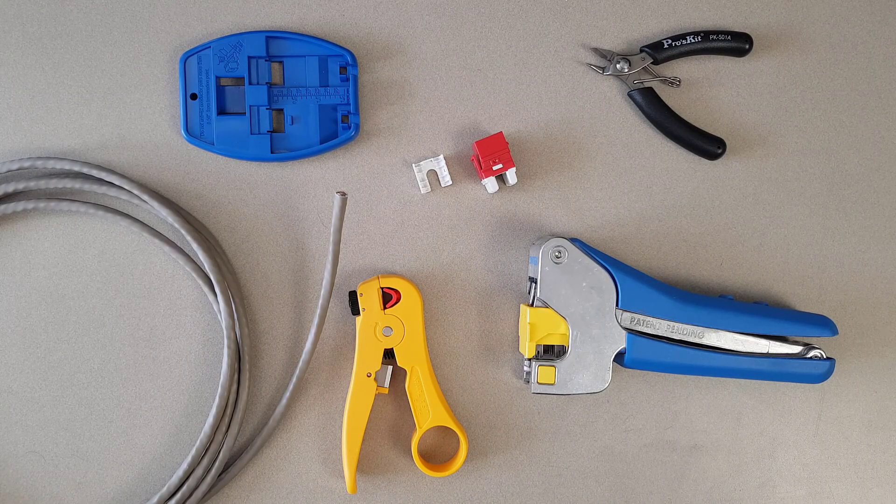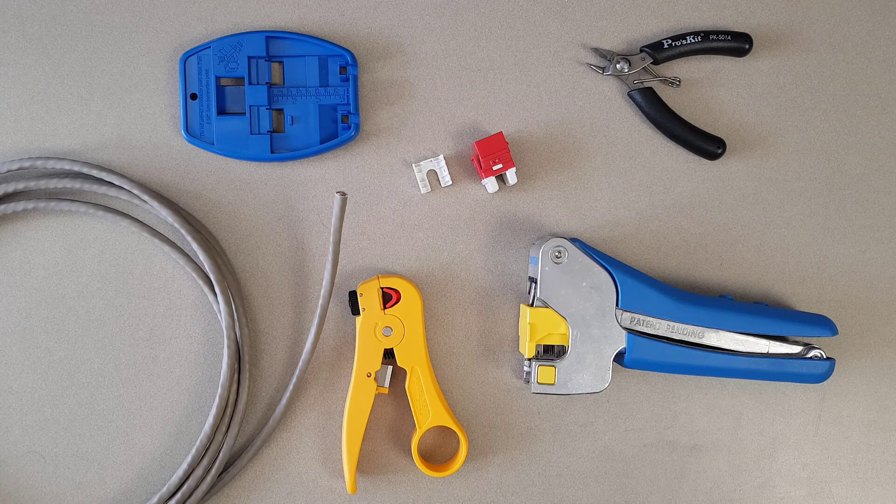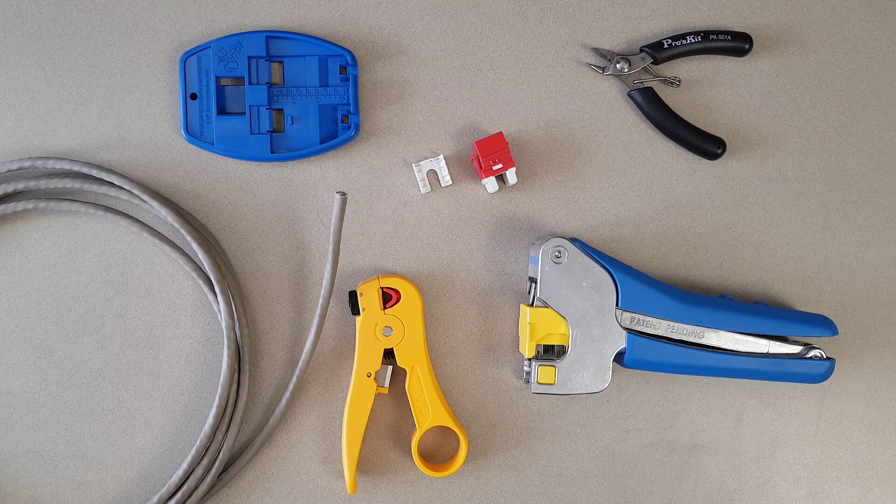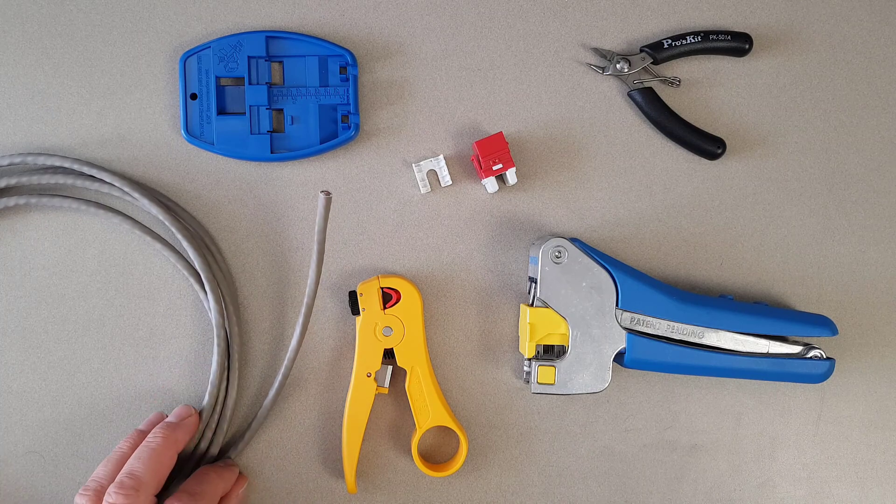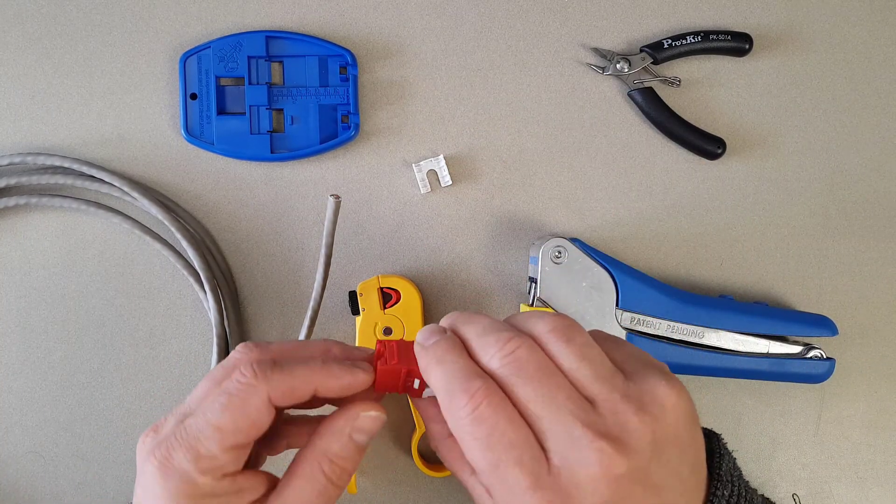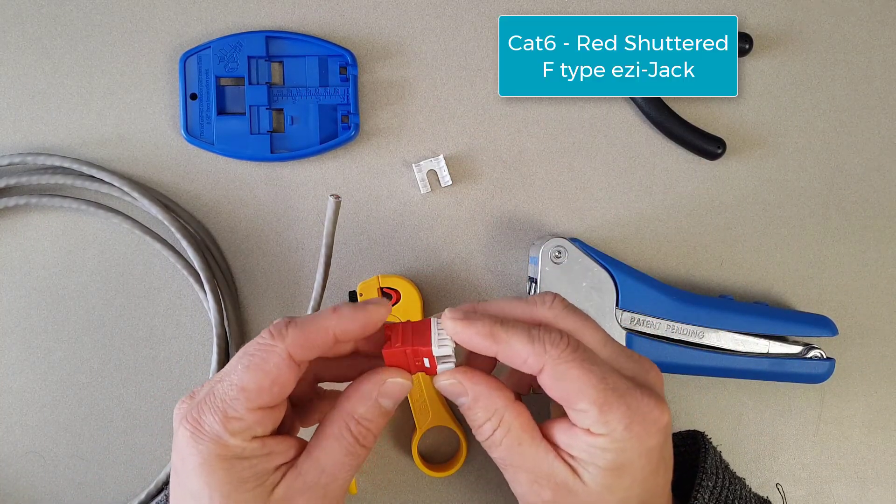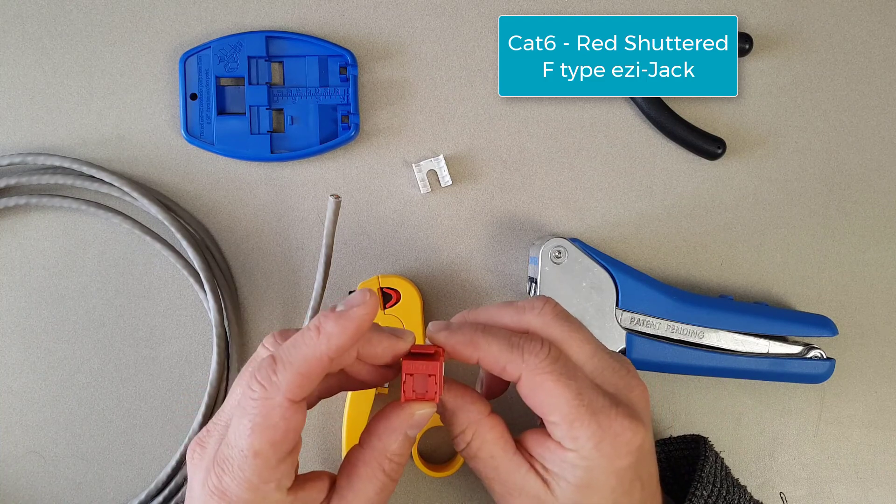Hello everyone, this is Paul from Dintech. In this tutorial we're going to be doing the termination of a Category 6 UTP solid core cable onto a Dintech CAT6 UTP shuttered style F jack.